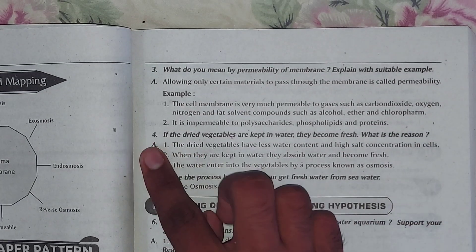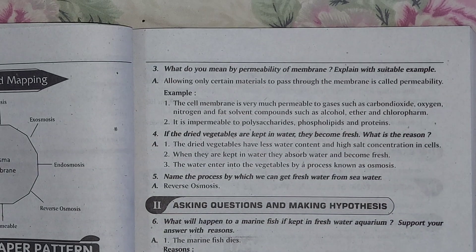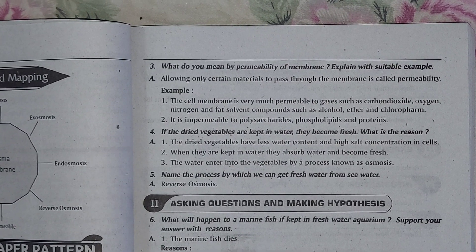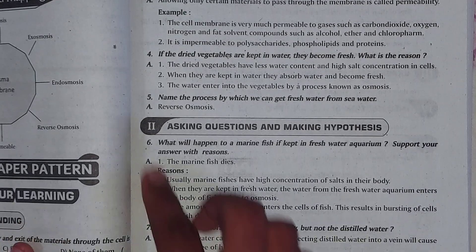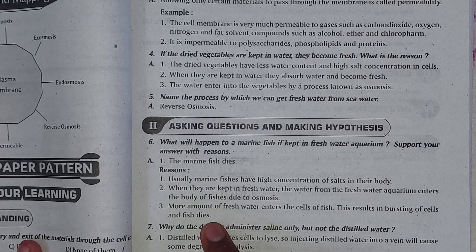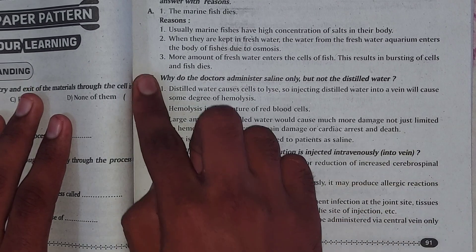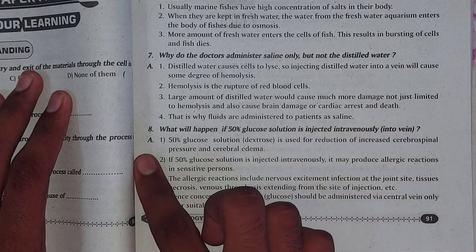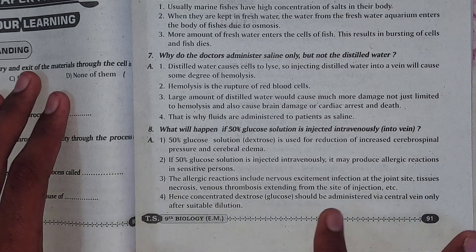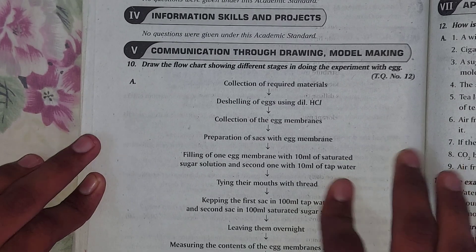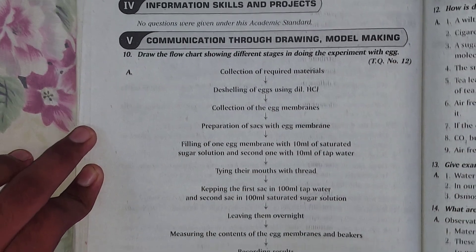The fourth question starts and ends here, followed by its answer. The fifth, sixth, and seventh questions each start and end in their respective sections. Moving to the next, the 10th question starts and ends here — its answer is shown in the chart up to here.